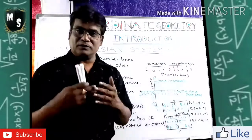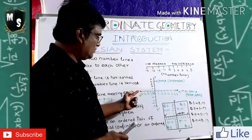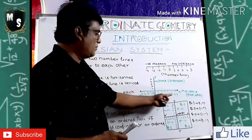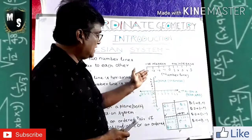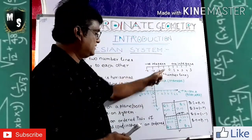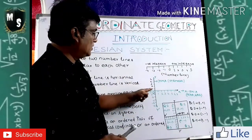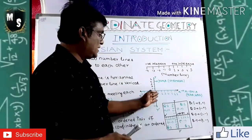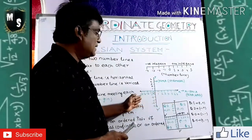Now students, if you take two number lines — one horizontally and one vertically — I took two number lines: one horizontal and another vertical. They are meeting each other at zero. So above zero is positive, below zero is negative. Zero right-hand side is positive, zero left-hand side is negative.